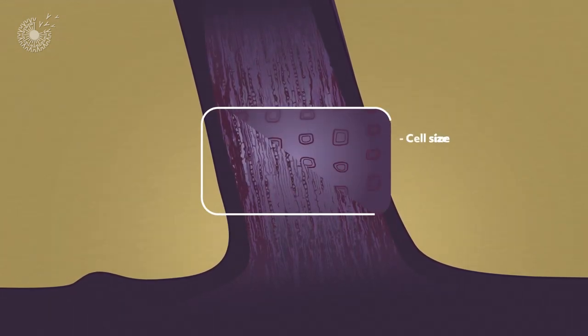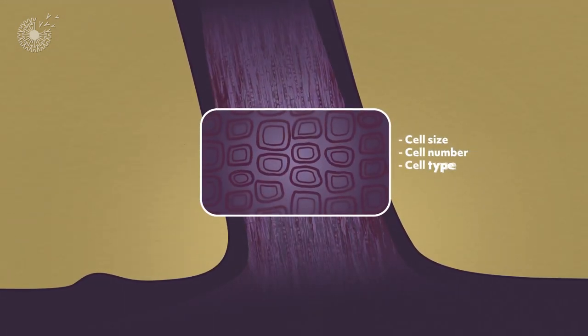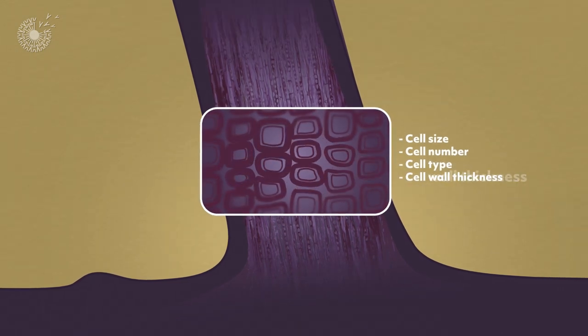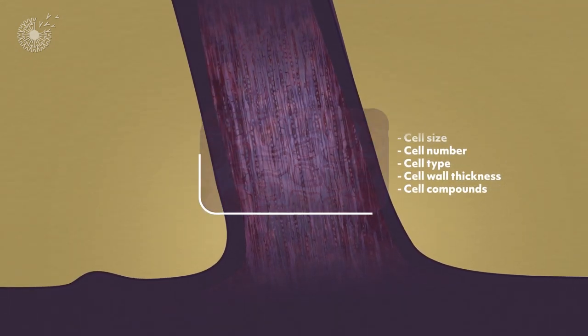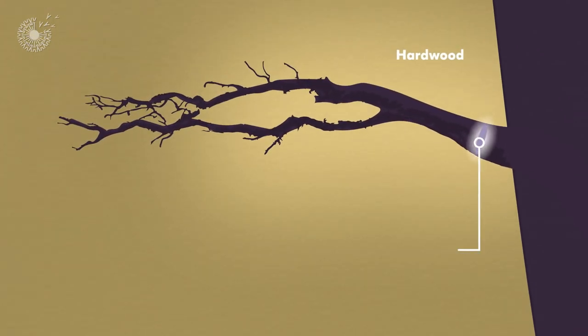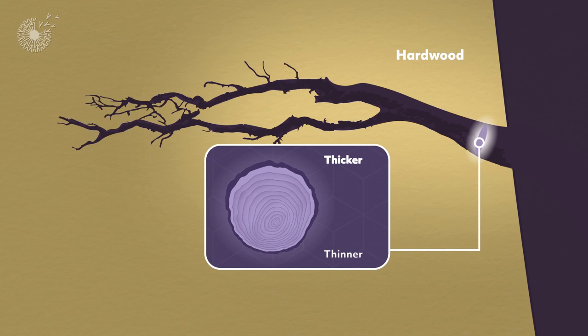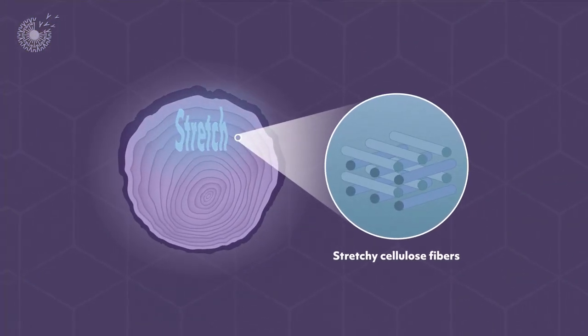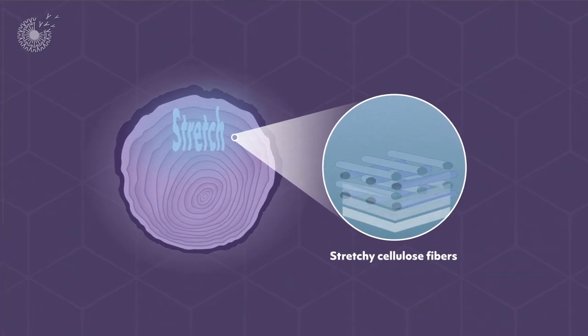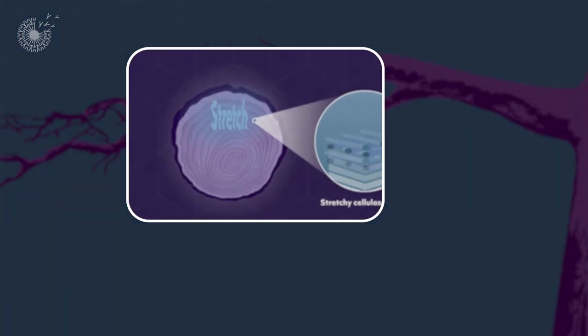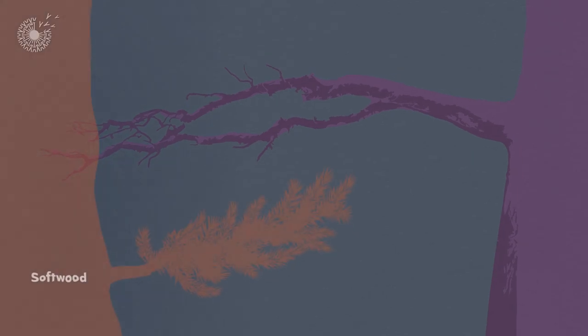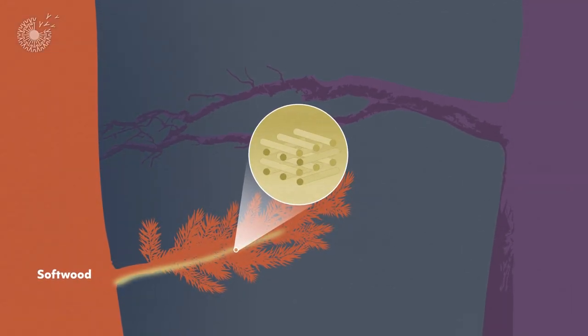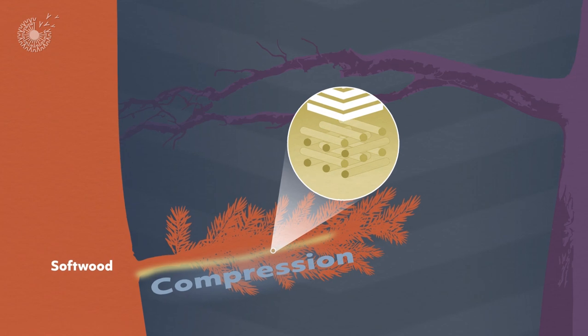As a trunk or branch grows, it will adjust the size and number of different kinds of cells, the thickness of cell walls, and the compounds within them. In hardwood trees, that results in rings being thicker on the top side of branches, stuffed with lots of stretchy cellulose fibers to accommodate the downward pull of tension. Alternatively, softwood trees build up the lower side of branches with rigid lignin to resist the crushing stress of compression.